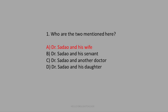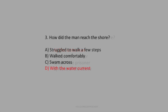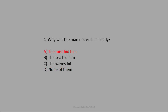Question 2: Who is the man referred to here? The white man, the Japanese soldier, the Japanese prisoner, or none of the above? The man is none other than the white man whom they found from the sea. Question 3: How did the man reach the shore? The answer is he was carried by the water current. Question 4: Why was the man not visible clearly? It was because of the mist that they were not able to see him clearly.